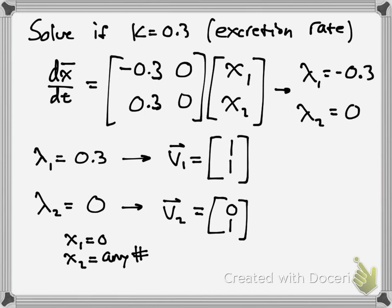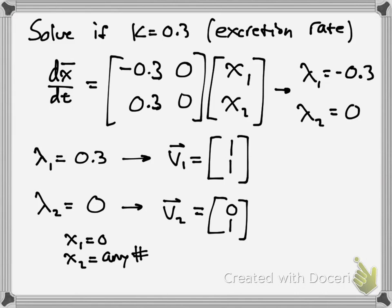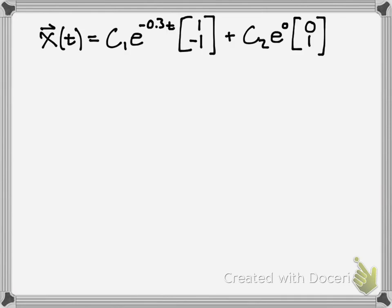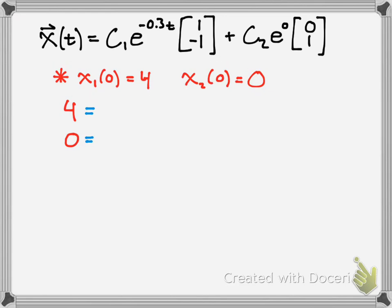Now you'd use the general solution, which is C1 e to the lambda t vector 1 plus C2 e to the lambda t vector 2. Using the values that we computed here, here's our eigenvalues and here are our eigenvectors. We plug it into the general solution. This would be our general solution, and then next you'd have to plug in the initial conditions to solve for your constants with your initial conditions given.